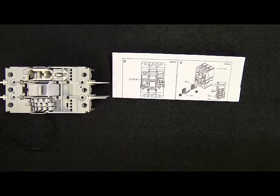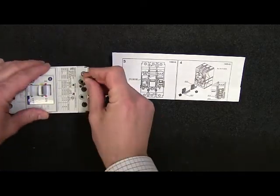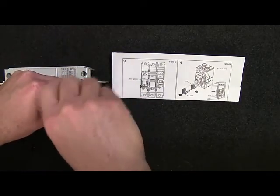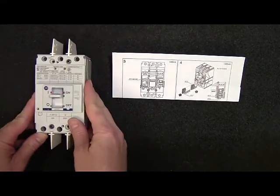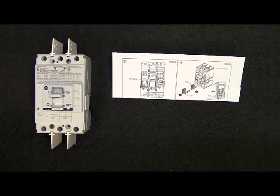Now you can replace the faceplate and tighten it down with the screws. You've now successfully added auxiliary contacts to your breaker.